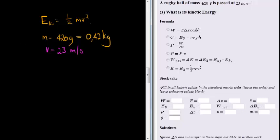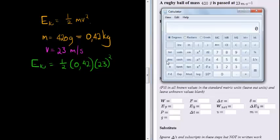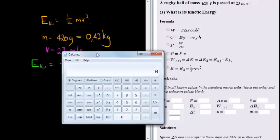So calculating the kinetic energy, not a problem. It's simply half the mass, so half of 0.42 times the velocity, that's 23 squared. And calculator comes in handy here. What do we get as an answer?